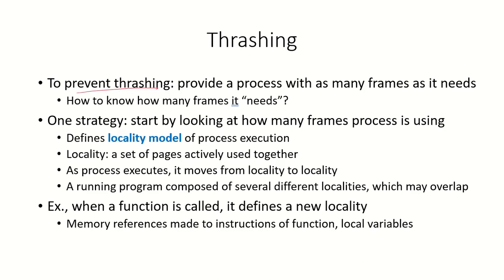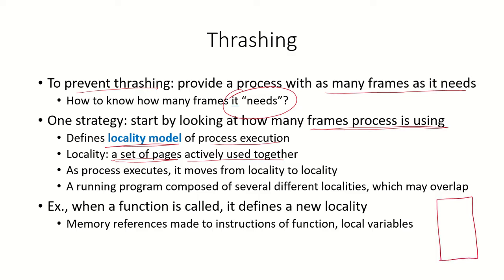To prevent thrashing, we can provide a process with as many frames as it needs. But how do we know how many frames the process needs? One strategy is to look at how many frames the process is using. A locality model of process execution is defined — it is the set of pages which are actively being used. As the process executes, it moves from locality to locality.